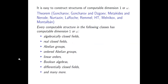Looking at computable dimension one or omega — these are mostly old results. For a lot of structures, dimension one means there's only one computable copy (computably categorical), or dimension omega means infinitely many different computable copies. In many natural classes — algebraically closed fields, abelian groups, linear orders — the only two possible computable dimensions are either one or omega. So there's some kind of structure going on; these are very structured classes.